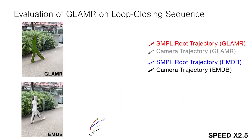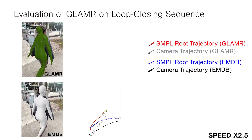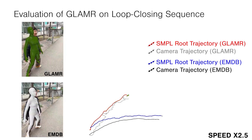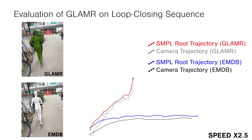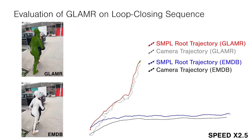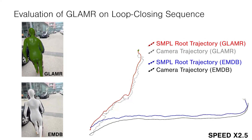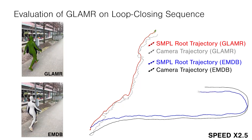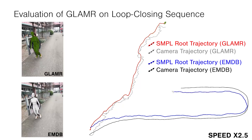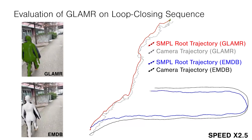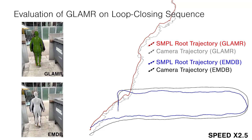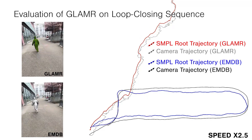Finally, we also evaluate recent work on the task of estimating the global body and camera trajectory. Here we show the result of Glamour on a loop-closing sequence taken from EMDB. While the reprojected local poses look reasonable, the predicted global trajectory of Glamour drifts significantly. With several interesting global trajectories included in EMDB, we believe it will play a major role in advancing future work in this challenging field. Thanks for watching.